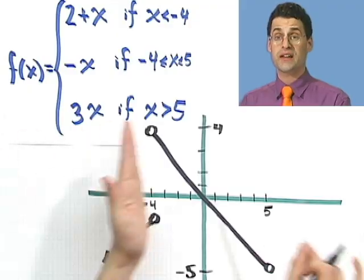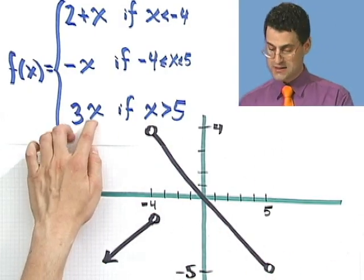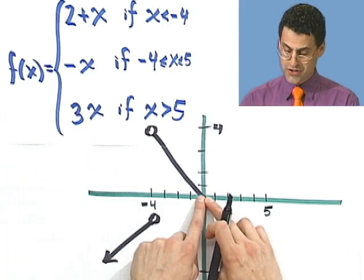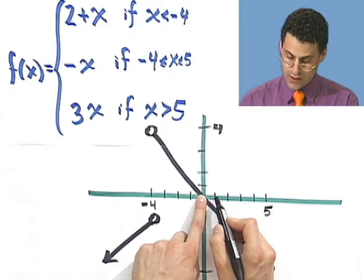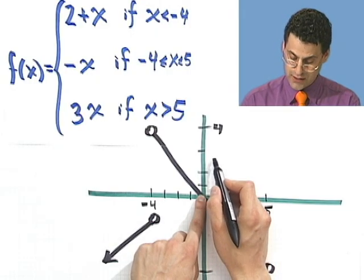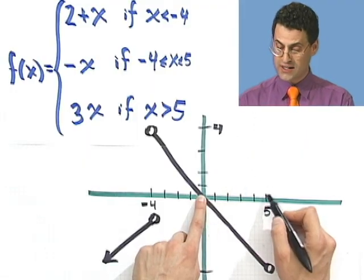Now, what happens when x is bigger than 5? If x is bigger than 5, then I'm looking at 3x. And what's 3x? That goes to the origin, and it has slope 3 over 1. So that means 1 over and 3 up. But I have to start it here at 5.